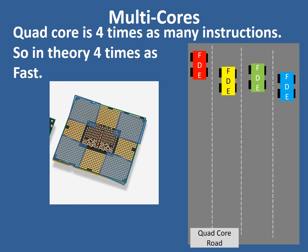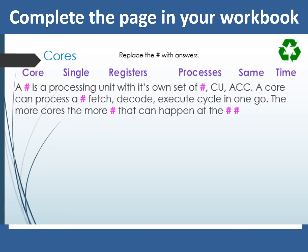With a quad core processor it's like having four processes, each with their own registers and their own CU. This means we can run four instructions at the same time — four sets of fetch, decode and execute — each potentially doing something different. In theory this makes it four times as fast as a single core processor. Please now complete this page of your workbook to explain what cores are using the keywords in purple.